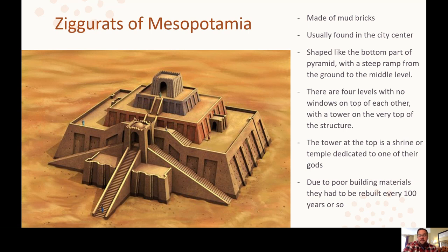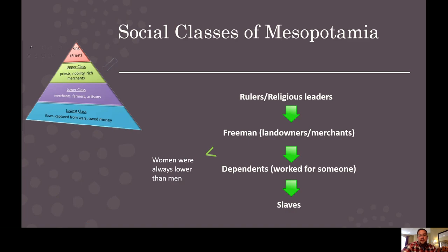Ziggurats of Mesopotamia are probably what they're most famous for. They're made of mud bricks, usually dried in the sun, and were typically in the center of the city. They were shaped like the bottom part of a pyramid with steep ramps going up the sides to different levels — usually about four levels, no windows. The very top had a shrine or temple dedicated to one of their gods. Interestingly, they weren't the best buildings because they were built with temporary structures and had to be rebuilt every 100 years or so.